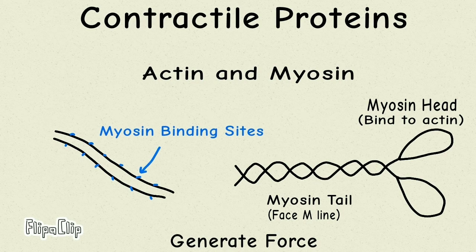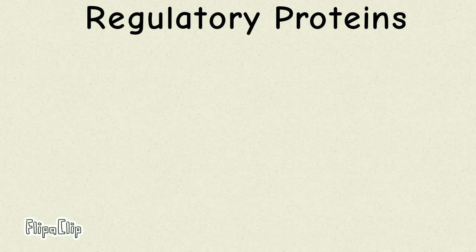Myosin, on the other hand, forms the thick filament. A thick filament has about 300 myosin molecules present in it. It has a tail which faces the M-line in the middle, and two heads which can then bind to actin on the myosin binding sites.